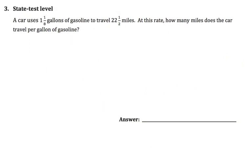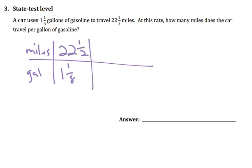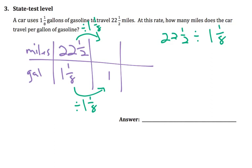Alright, if a state test does this type of problem, sometimes they'll try it with two mixed numbers. So let's try this one. So we have miles and gallons. It really doesn't matter which one you choose for the top or the bottom, as long as you know which one we're trying to find one for. So we have 1 and an eighth gallons and 22 and a half miles. We're trying to get to one gallon. So already I know that my answer should be really close to 22 and a half, because we're only going down an eighth of a gallon. But let's use the same strategy, dividing by 1 and 1 eighth.